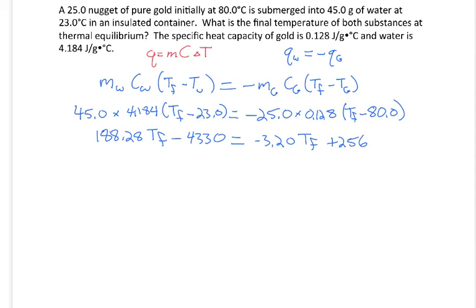Okay, so now I want to get the T_f terms together by itself on the same side. So I'm going to add 3.20 T_f to both sides, and then I'll add 43.30 to both sides. Now I divide both sides by 191.5, and to three significant figures, my final temperature is 24 degrees Celsius.